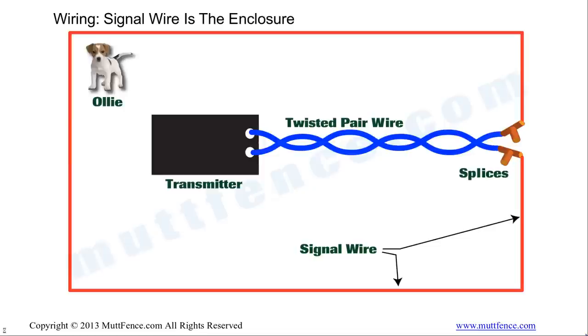The effect of that is your dog, when wearing the electronic collar, will be enclosed in that red area. Remembering again, he can cross the twisted pair wire.